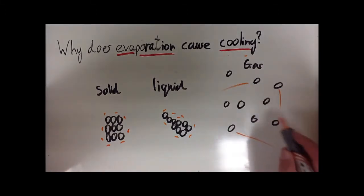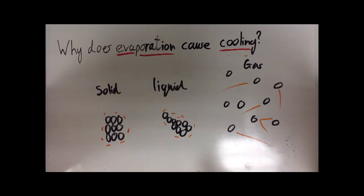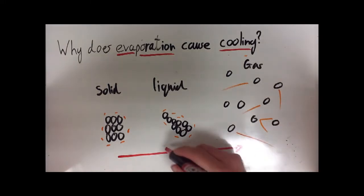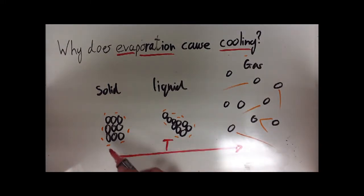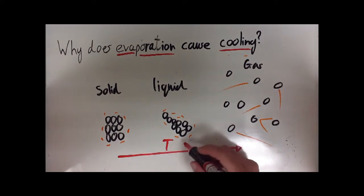Gas particles are whizzing all over the place, bouncing off each other, bouncing off things, creating gas pressure. Now what you'll see increasing here as we go from a solid to a liquid is the temperature. So this could be ice, this could be water and this could be steam. So the temperature in degrees C increases.